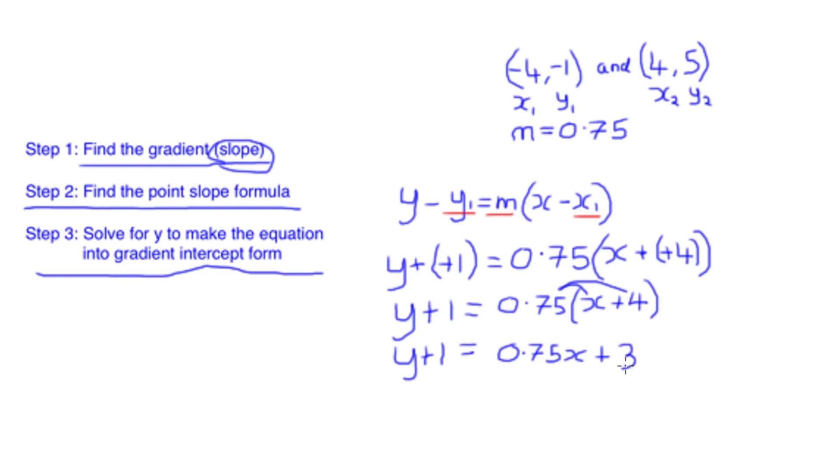Now all we need to do is get rid of this lingering 1 that we have here. Remember, what we do to one side of the equation we do to the other, so if we're taking 1 from here we must also take 1 from the other side of the equal sign. If we do that we'll have just y on the left-hand side of the equation, followed by 0.75x, plus we have 3 but we're taking 1 from it, which gives us 2.